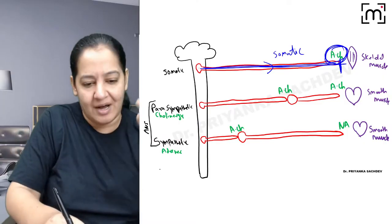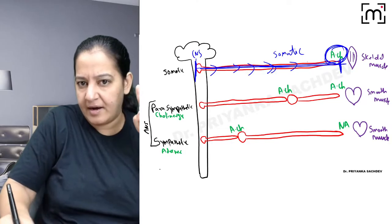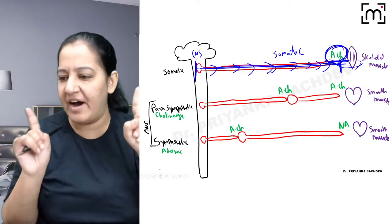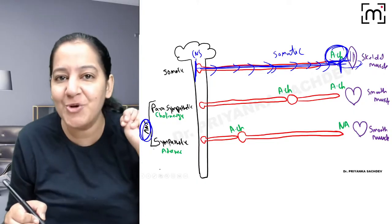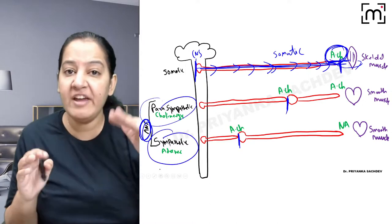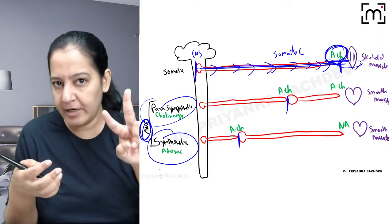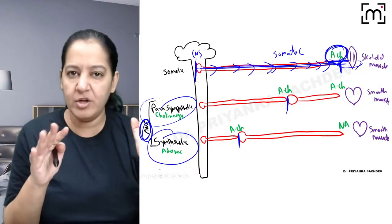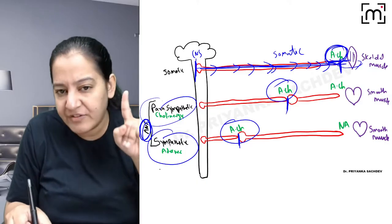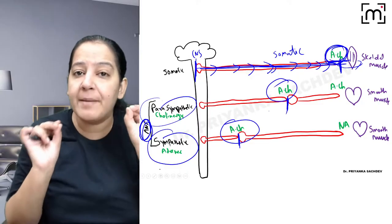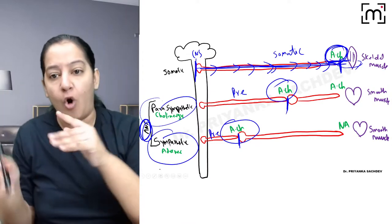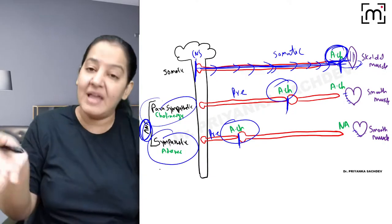In autonomic nervous system, we have two neurons — so we require two neurotransmitters: one at the pre-ganglionic level and one at the post-ganglionic level. At the pre-ganglionic level, it is always acetylcholine — whether parasympathetic or sympathetic. But at the post-ganglionic level, it differs. In parasympathetic, the post-ganglionic neurotransmitter is also acetylcholine. In sympathetic, the post-ganglionic neurotransmitter is noradrenaline.